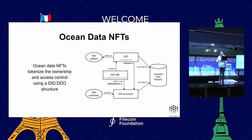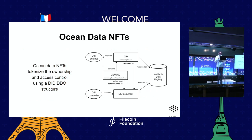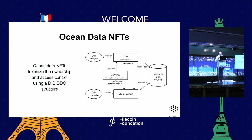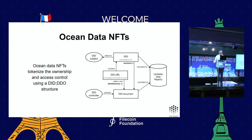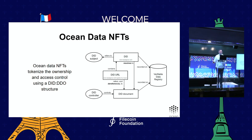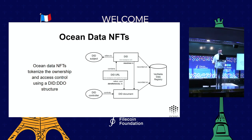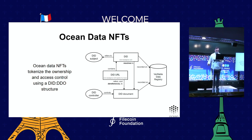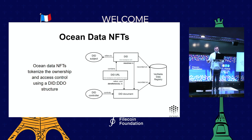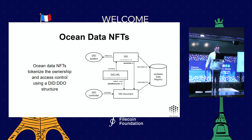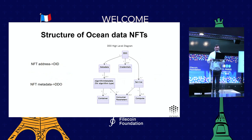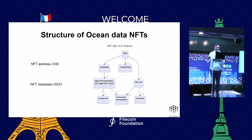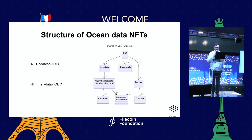At the core are our Ocean Data NFTs, which allow the ability to tokenize all the ownership and access control of these data assets. It follows the DID and DDO structure, where the NFT address is used to represent the decentralized identifier for a digital asset — such as a dataset or an algorithm. The DDO structure then describes all the information about the dataset itself, including access control mechanisms, who the ownership is, and the description of the asset.